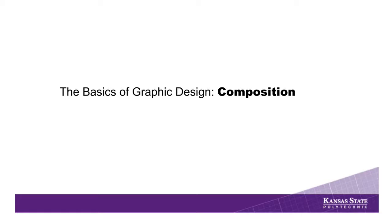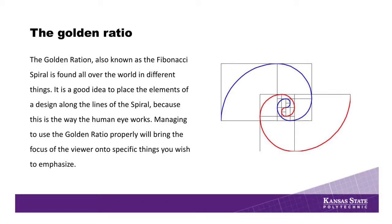The next few areas cover the overall composition of a design. The first one is the golden ratio, which has been around for a long time. Leonardo da Vinci used the golden ratio in many of his paintings and drawings. It relates to the way the human eye works and a kind of spiral pattern. A lot of designers take this into effect when working on a layout — it's about how the eye moves and setting up their layout in that manner.